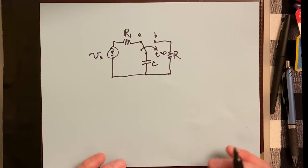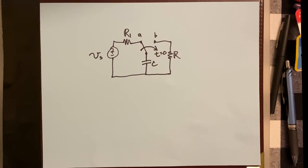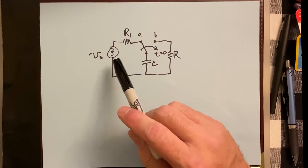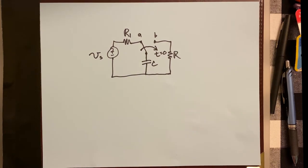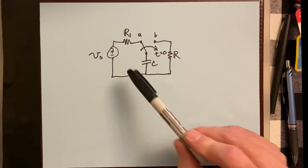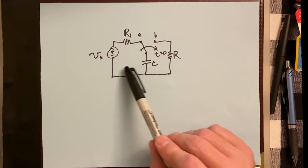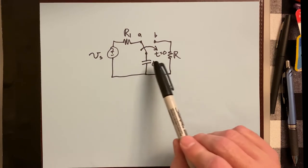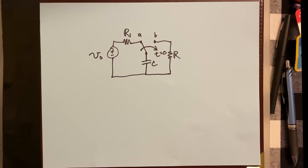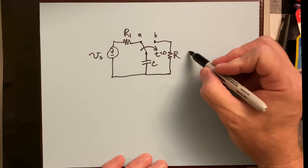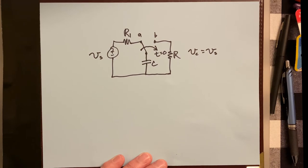Before T equals zero, the switch is in position A. Current flows around the circuit, building up charge on the capacitor plates until the potential difference across the capacitor equals the source voltage. At that point no more current flows — the capacitor is completely charged, with voltage equal to V_S.